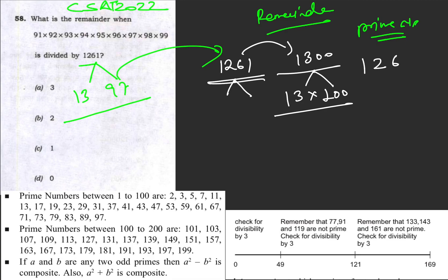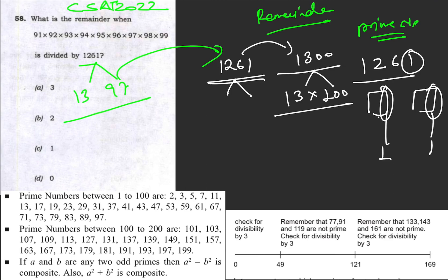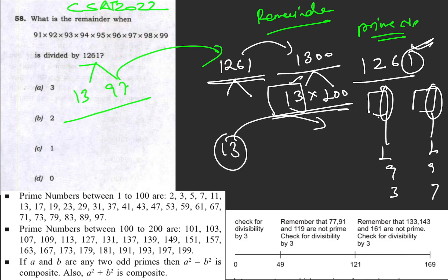For 1261, the unit digit is 1. So if I want to factorize this number into two factors, the unit digits of those two factors must combine to give 1 — that means pairs like 1×1, 9×9, 3×7, or 7×3. From this analysis I figure out that one factor is 13. If it is 13 and I want the unit digit of the product to be 1, the other factor must end in 7.